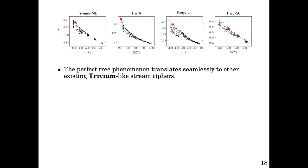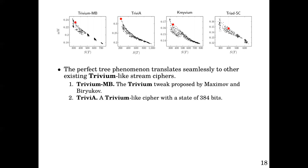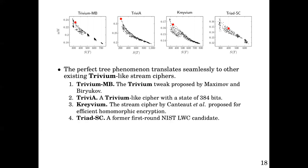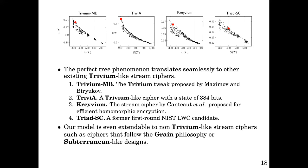The perfect tree phenomenon translates seamlessly to other existing trivium-like stream ciphers: Trivium MB, the trivium tweak proposed by Maximov and Biryukov; Trivia, a trivium-like cipher with a state of 384 bits; Cravium, the stream cipher by Canto proposed for efficient homomorphic encryption; Trivia, a former first-round NIST LWC candidate. Our model is even extendable to non-trivium-like designs and ciphers that follow the Grain or subterranean philosophies.